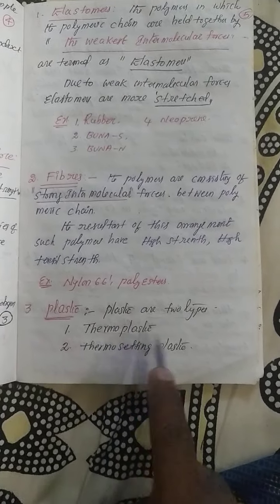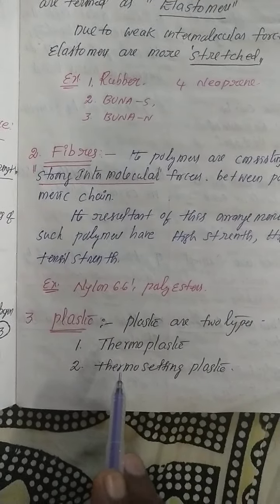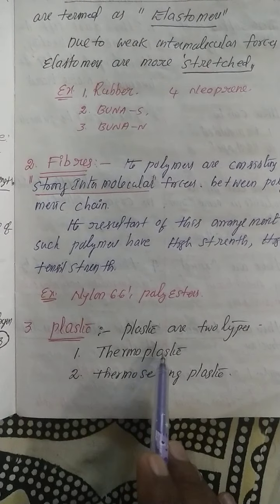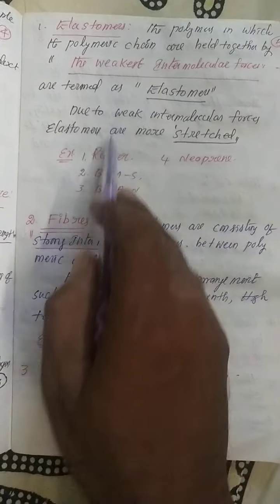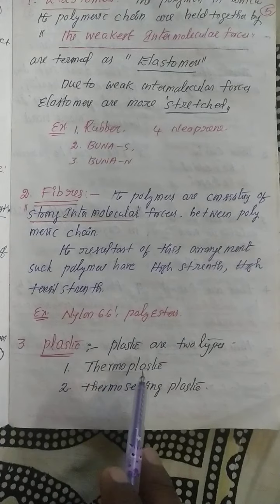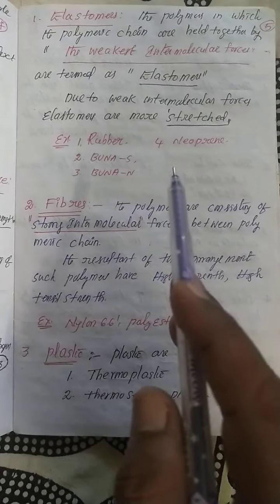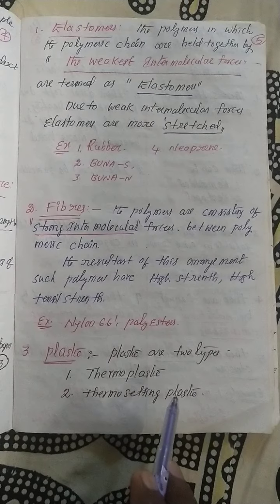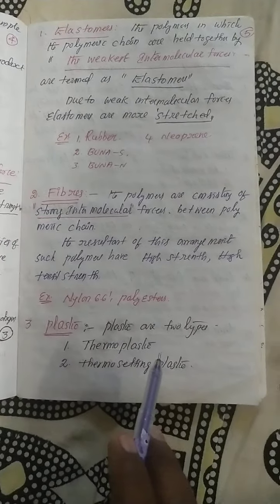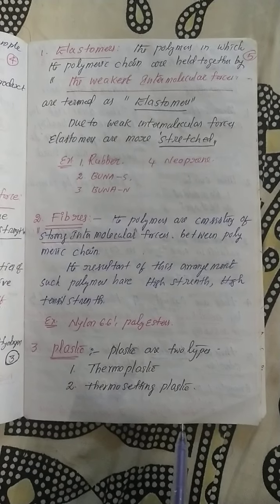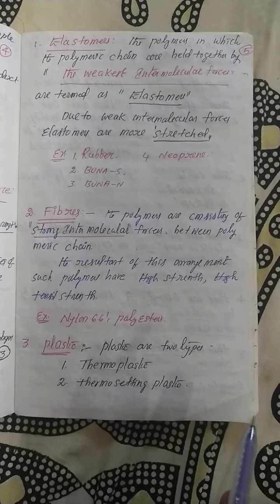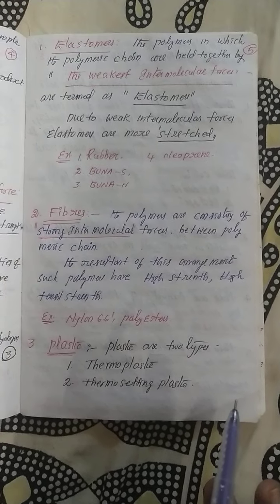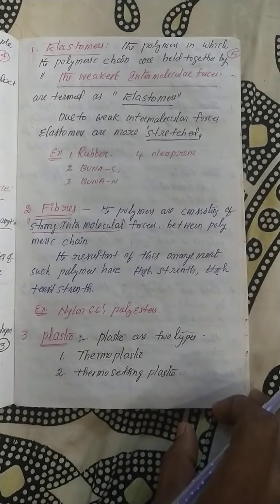The third category is plastic. There are two different types of plastics: thermoplastic and thermosetting plastic. Thermoplastics have intermolecular forces in between those of elastomers and fibrous. Thermosetting plastics have very, very strong intermolecular forces. So: elastomers are weak, fibers are strong, thermoplastics are moderate, and thermosetting plastics are very, very strong.